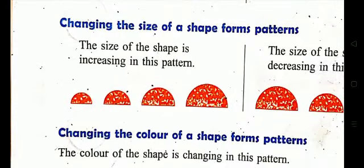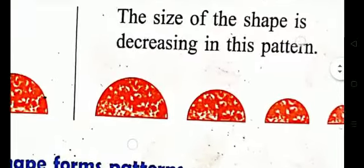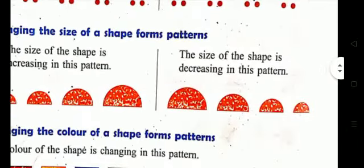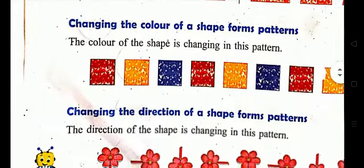Third, changing the size of a shape forms a pattern. You can see a semicircle is given — the size is increasing here. And here you can see the size is decreasing. So changing the size of a shape also forms a pattern.